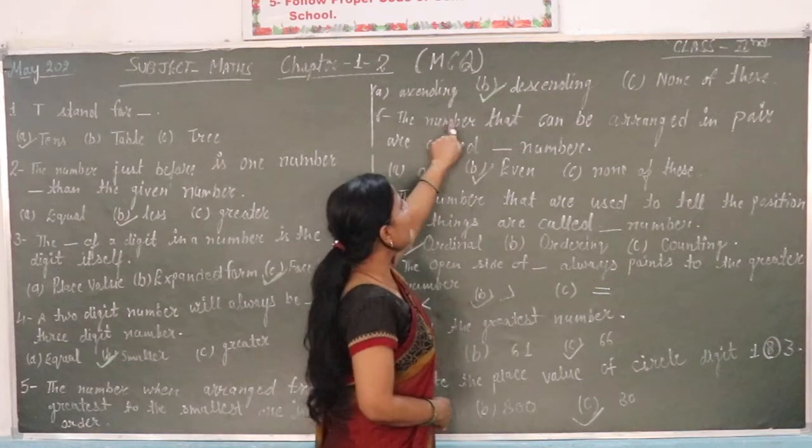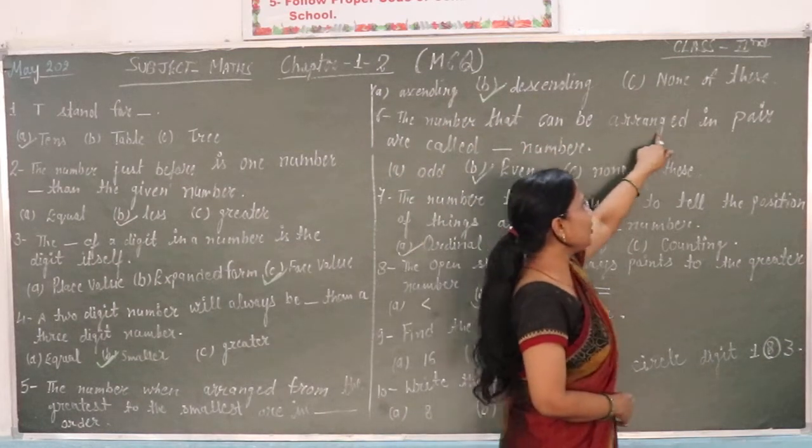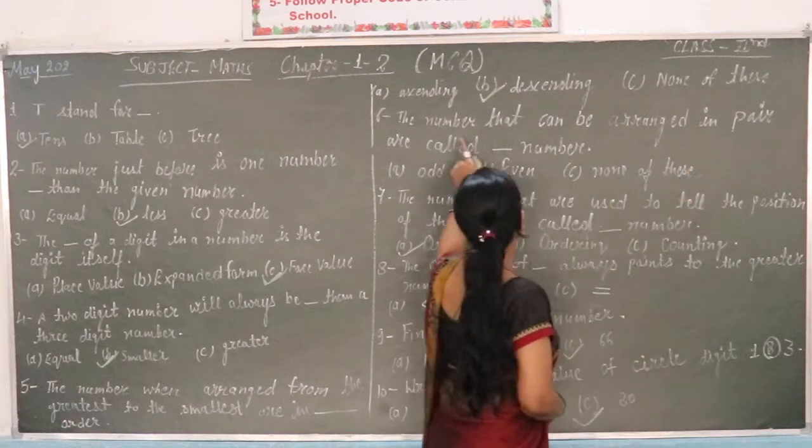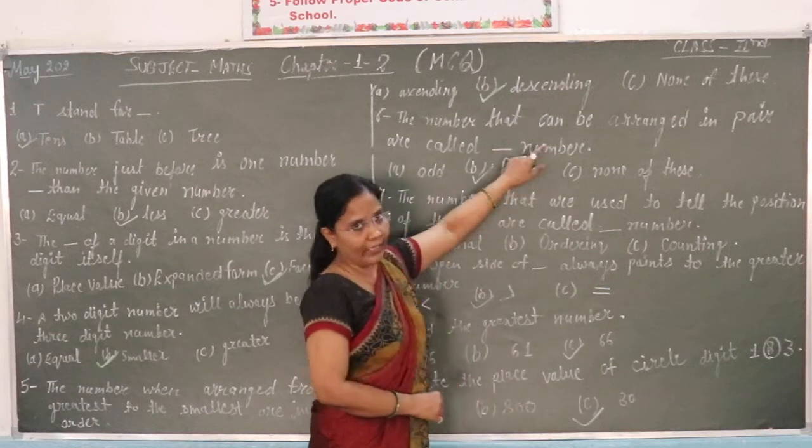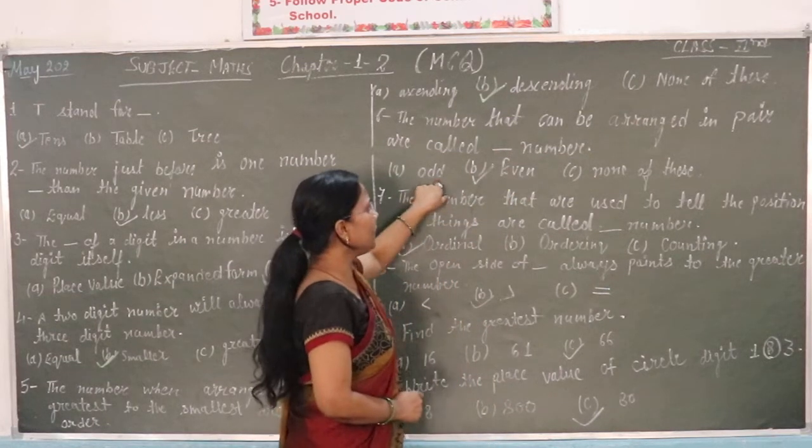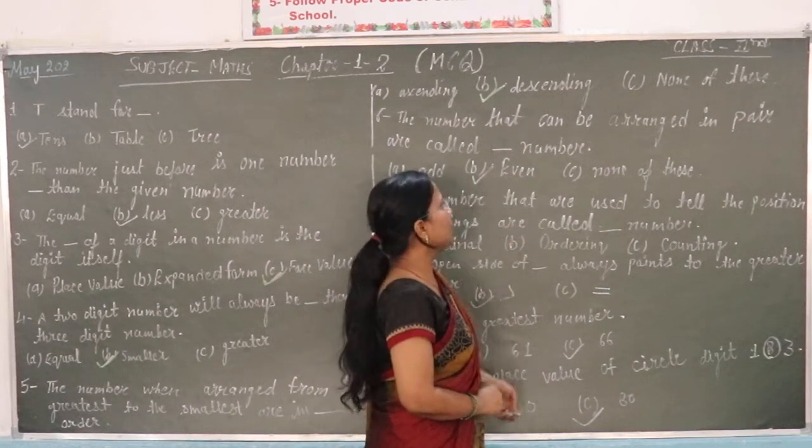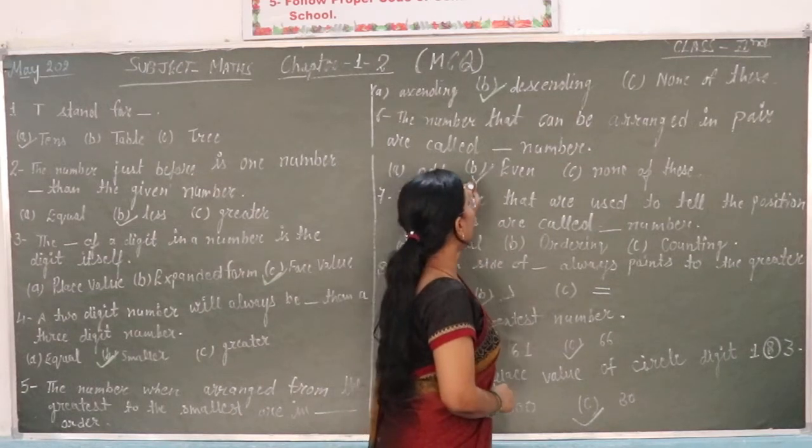Numbers that can be arranged in pairs are called blank numbers. Options: odd number, even number, non-office. The answer is even numbers.